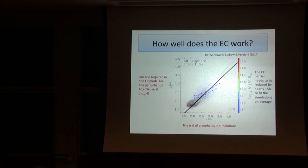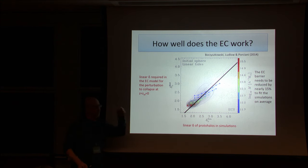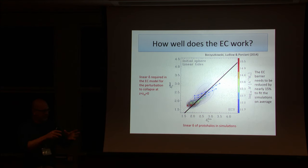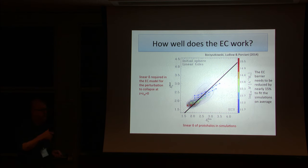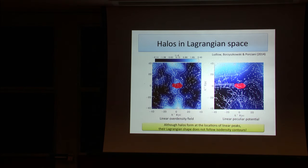You measure everything in the simulation. In the proto-halo, you measure the three lambdas and you evolve with the ellipsoidal collapse model, requiring collapse. So the only free parameter is the normalization of the lambdas.